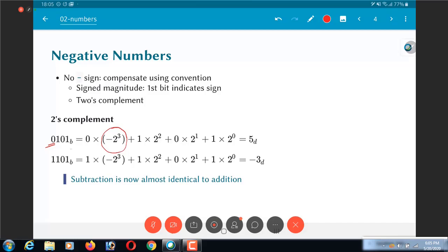If the most significant bit was a 0, that effectively means the resulting number is going to be positive. And when I evaluate it I come up with 5 decimal as before.